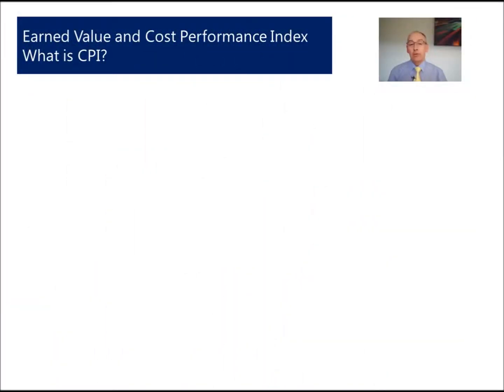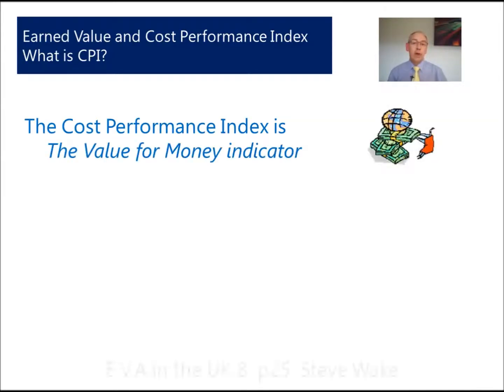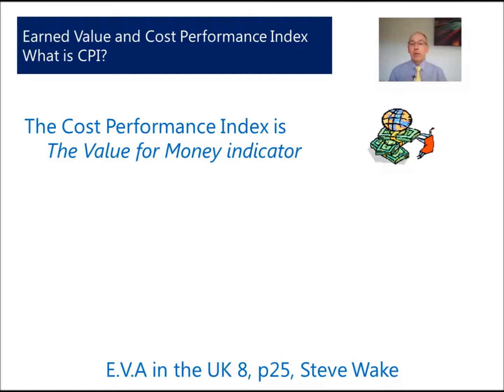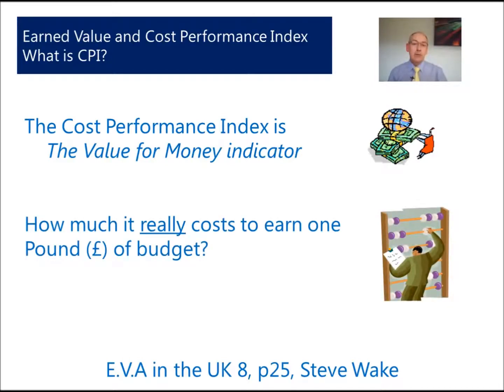This video podcast explains the CPI and the advantages to you in using this to calculate, during implementation, the estimate at complete and the variance at complete. The CPI is known as the cost performance index, also known as the value for money indicator. Steve Wake's book EVA in the UK asks the question: how much does it cost to earn one pound of budget?